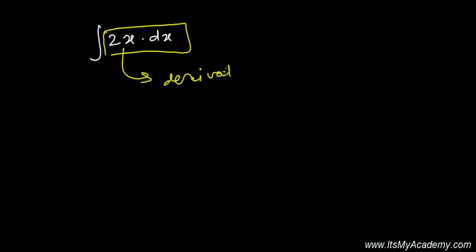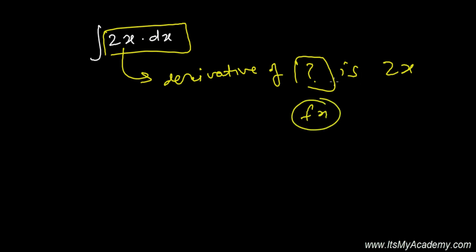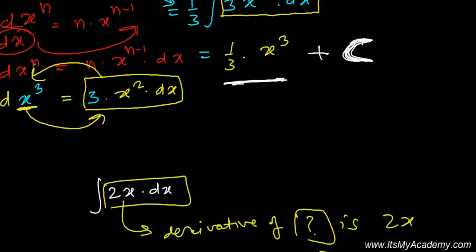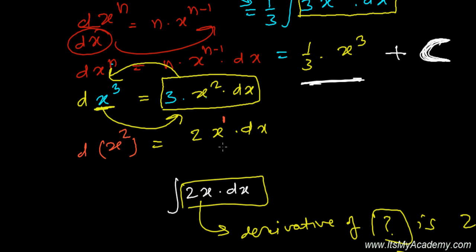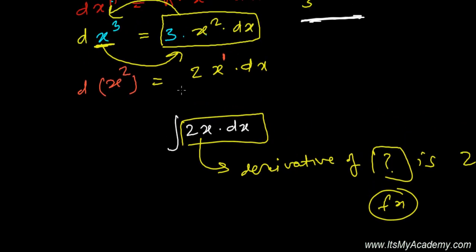Let me give you one more example. This means the derivative of what is 2x? What function gives derivative 2x? Again from the power rule: we have 2x times dx here. If the power is 1, then one more should be here — x to the power 1 plus 1, which is x squared. And the derivative of x squared is 2x dx. Since integration is just the reverse process of derivative, I'll write x squared directly.